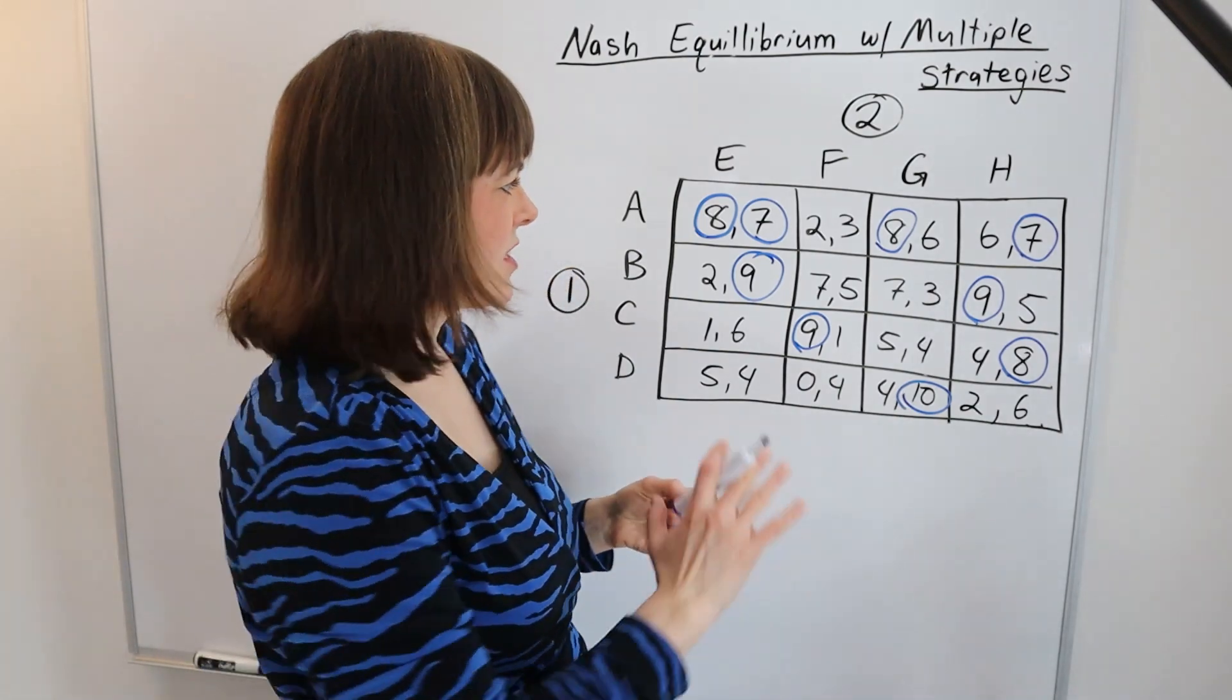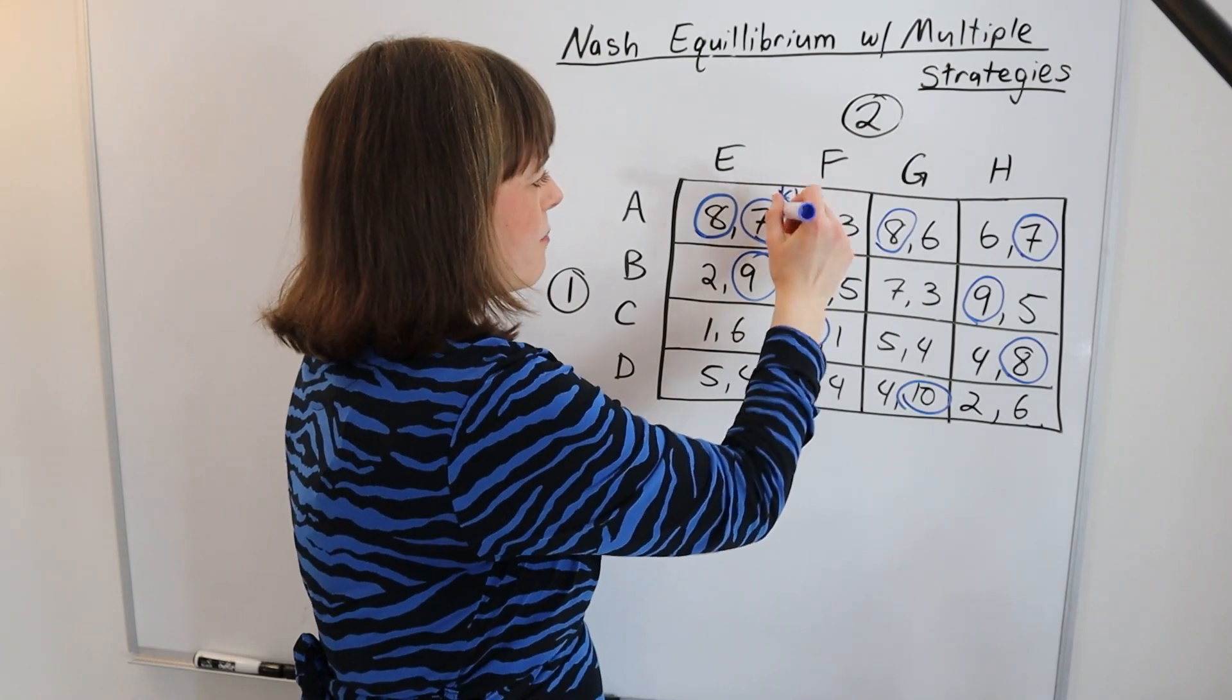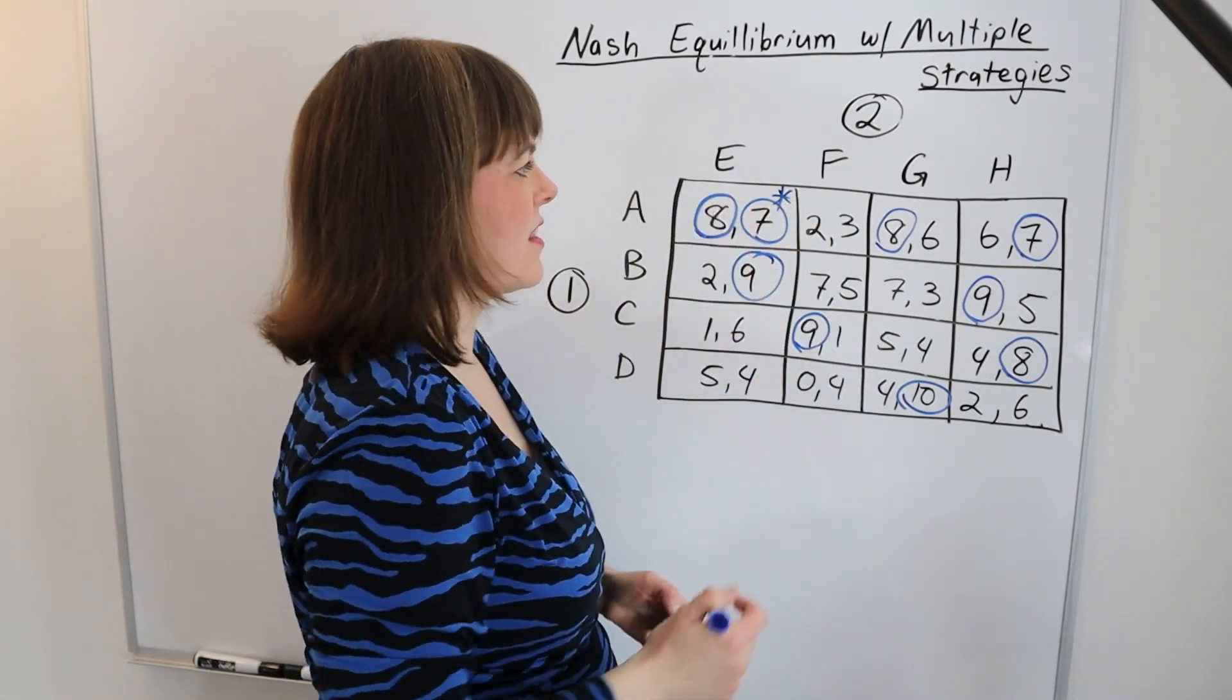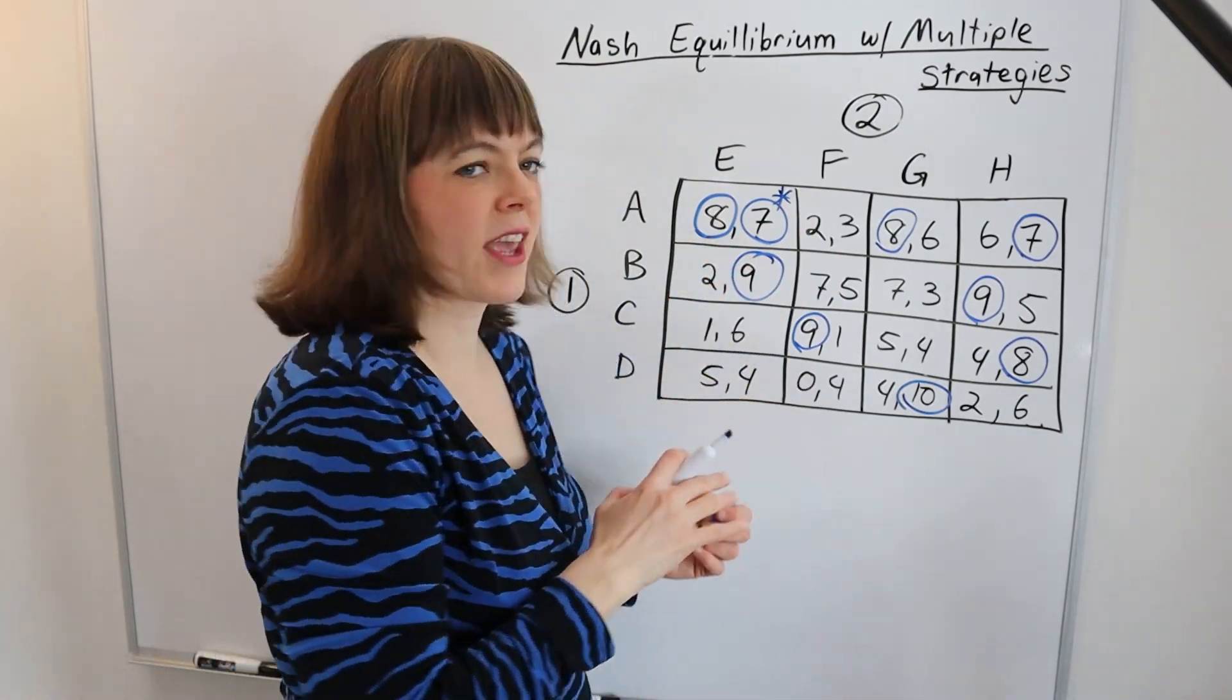We have a situation where there's only one box in this matrix where both players have a best response to the other player. So this is the Nash equilibrium in this particular game.